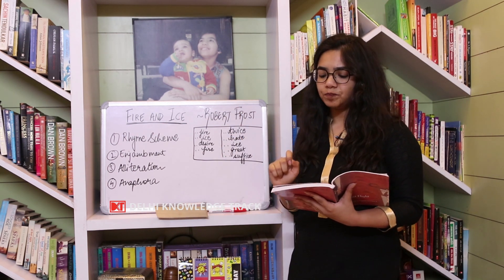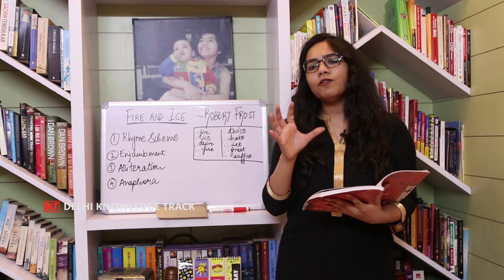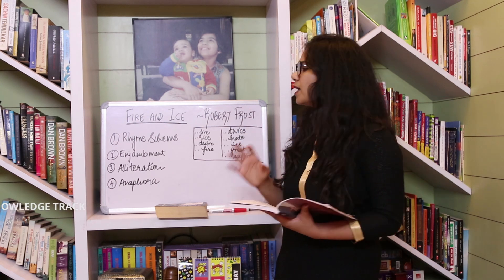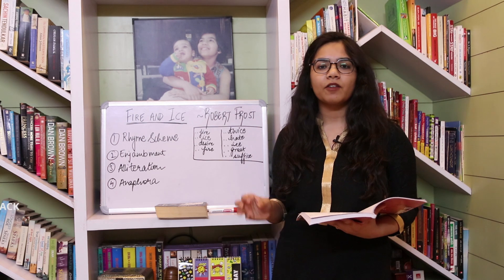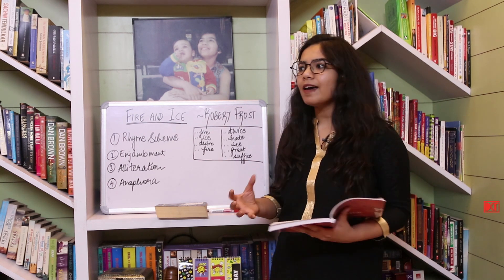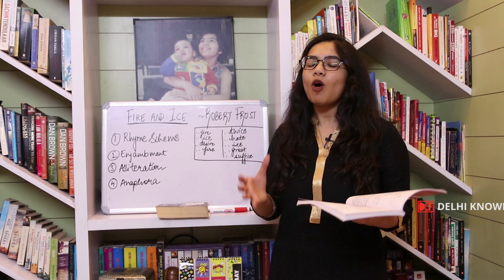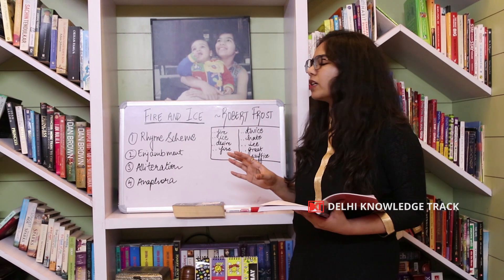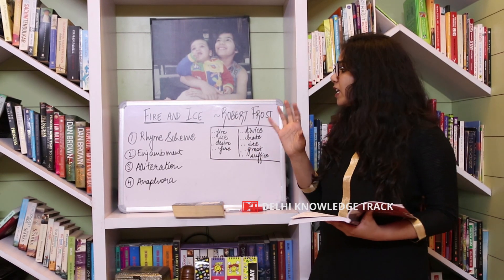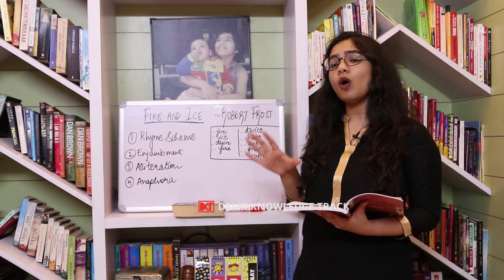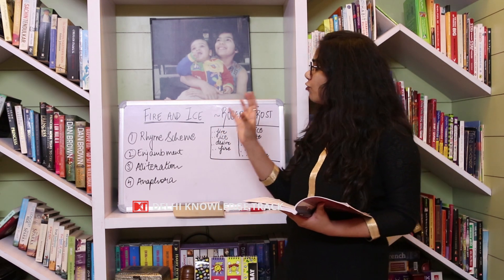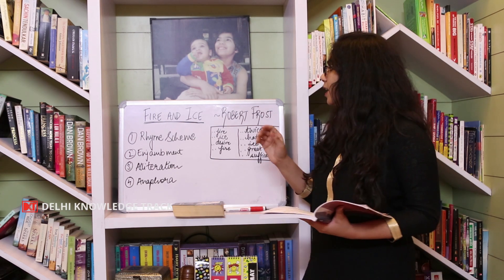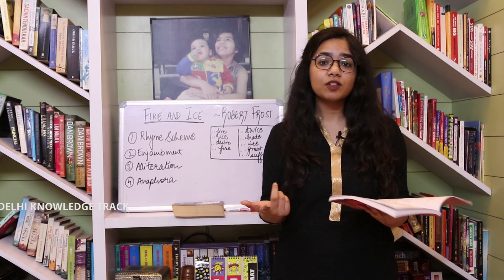If you see the title — Fire and Ice — for a layman, for common people like you and me, fire and ice means two opposite things. Fire means aag, ice means barf. These are opposites in terms of temperature, meaning, and every other sense. So why has the poet given the title of his poem in the form of two opposite terms? That is what we should be curious about.